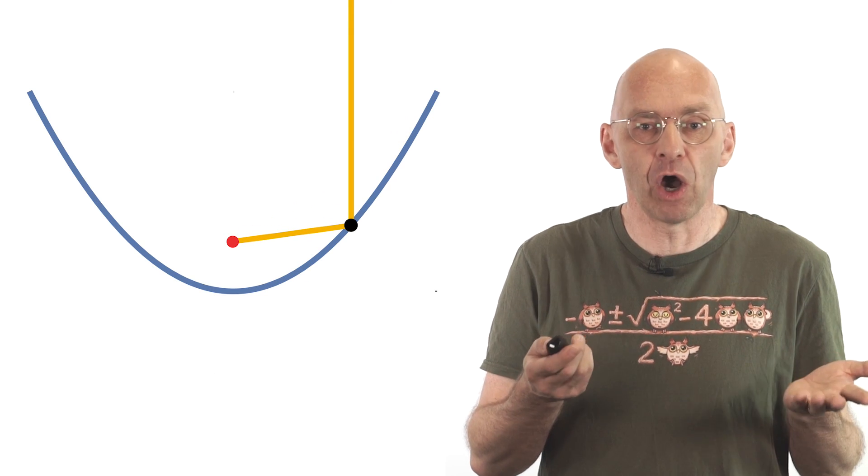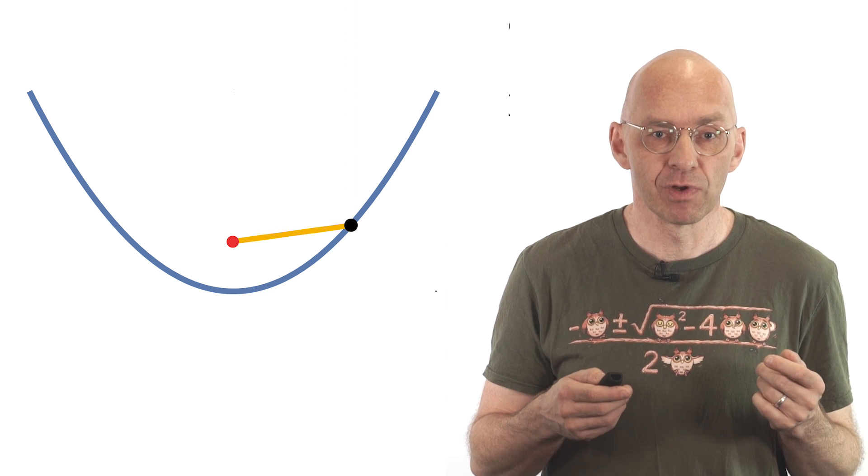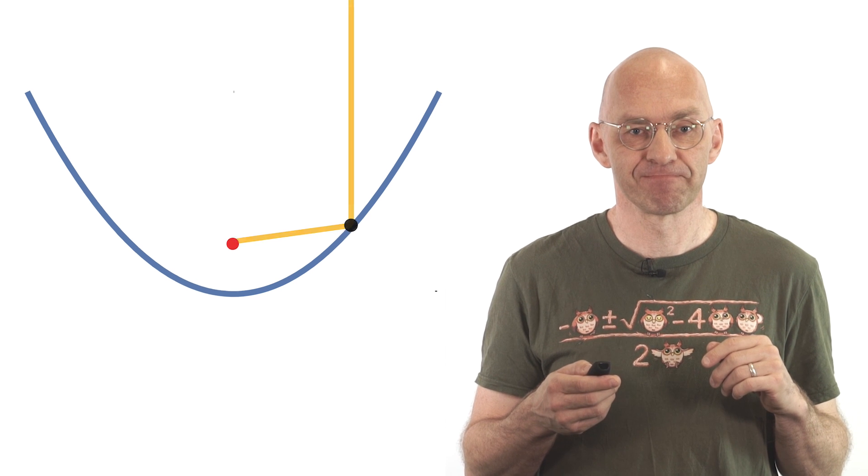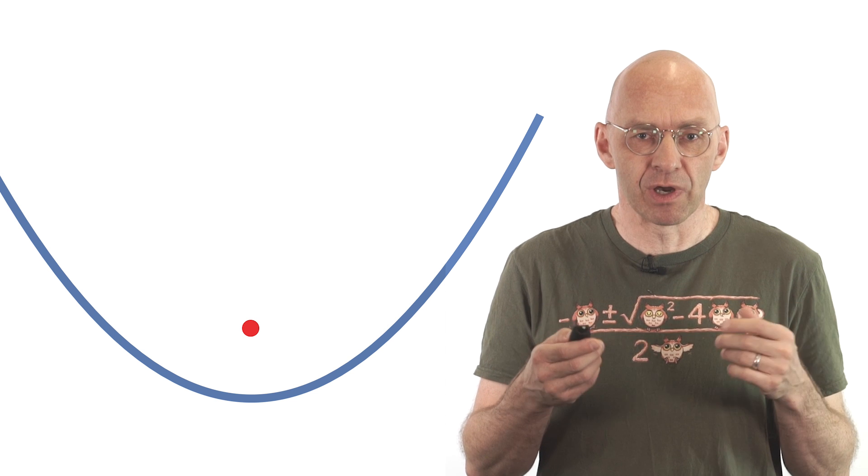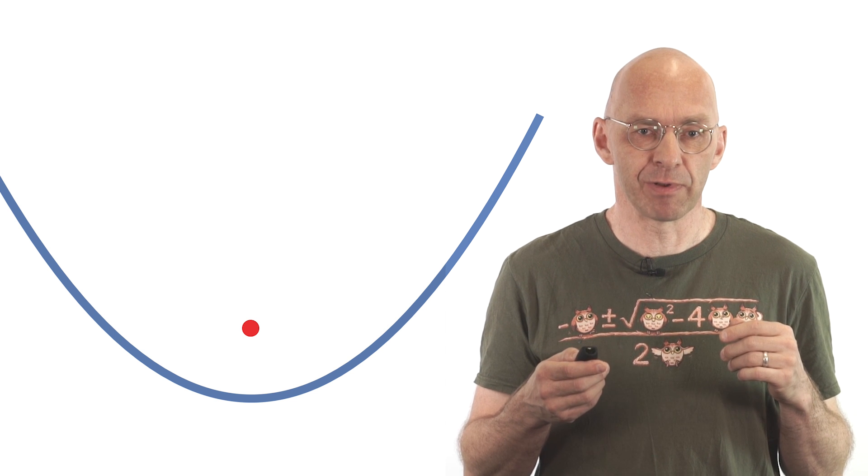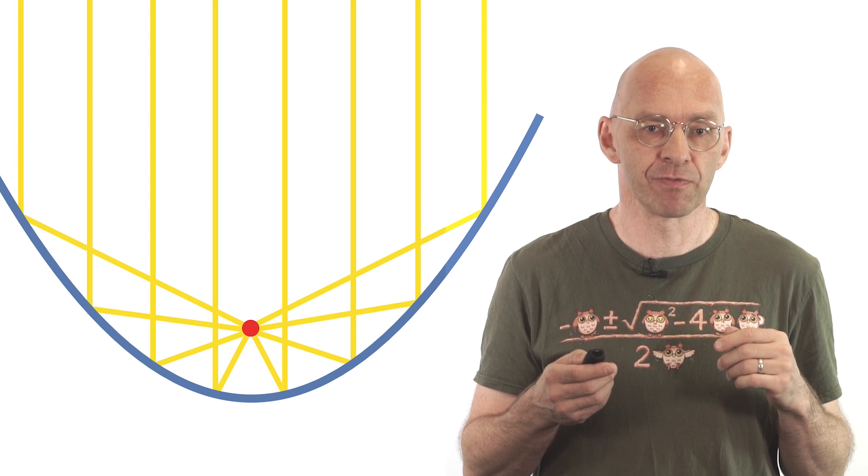Of course this also works in the opposite direction. Any ray emanating from the focus will be reflected into a vertical ray. I'm sure that many of you are aware of this focusing property of the parabola and its myriad applications in the guise of parabolic reflectors and mirrors.